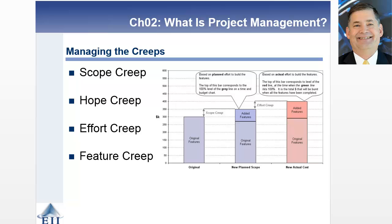Hope creep is when a project team member falls behind schedule but reports that he or she is on schedule, hoping to get back on schedule by the next report date. Hope creep captures those project team members who are hoping to catch back up. How do you fall behind? You do it one day at a time — and that's exactly what hope creep represents.